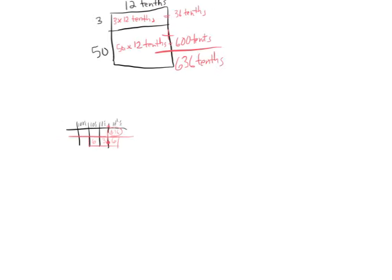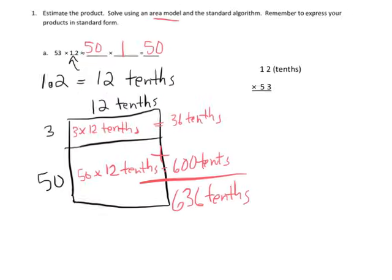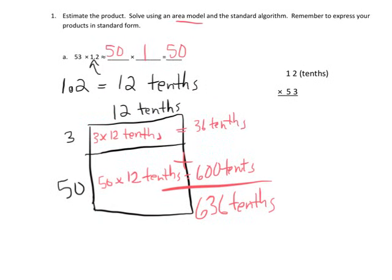So if we kind of zoom back in and zoom back over here. So the fact that we got 63 right here, 63.6. And our estimation was 50. Hey, that tells us we're pretty darn close.